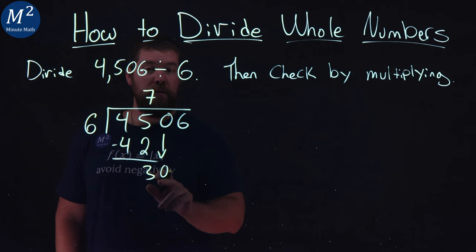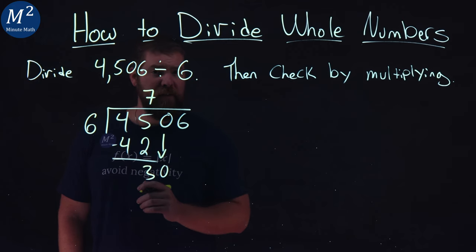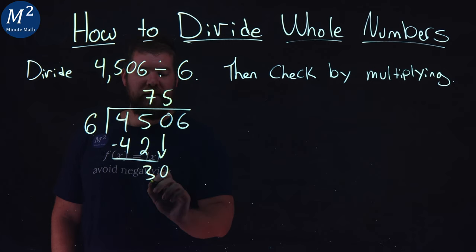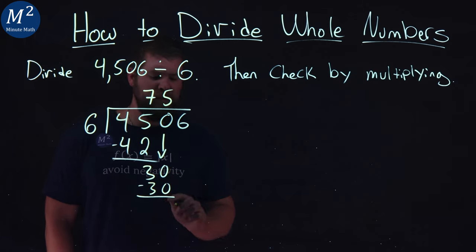Does 6 go into 30? And that's going to be 5 times exactly. 5 goes right here over the 0. 5 times 6 is that 30 right there. Subtract the two numbers. 30 minus 30 is 0.